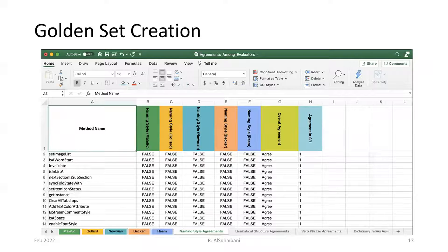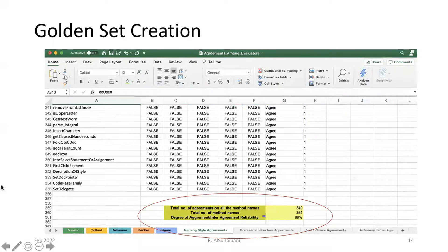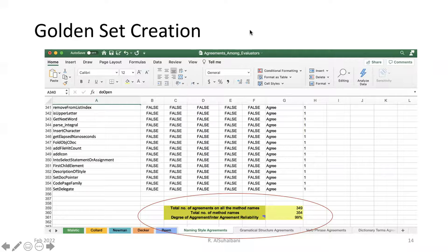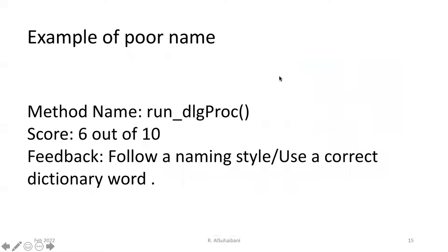Another screenshot shows how we checked for agreements among evaluators, and we also calculated percentages for the degree of agreement among evaluators. This is an example of a BOR method name, which got 6 out of 10.